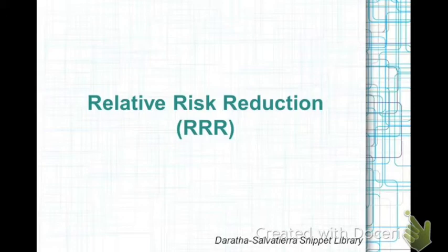RRR, or relative risk reduction, is a statistic commonly reported from clinical trials based on its ability to produce seemingly impressive values.